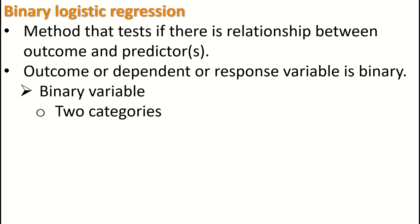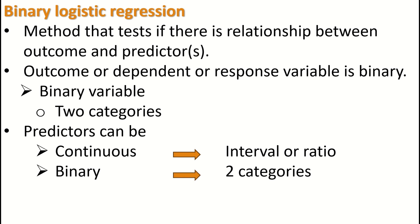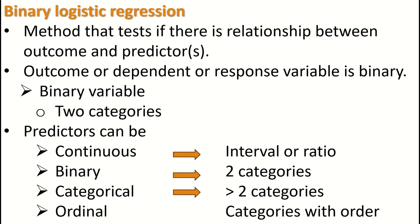It is a nominal variable, a categorical variable with only two categories. On the other hand, the predictor or predictors can be either a continuous variable measured at an interval or ratio level, or it can be a binary variable with two categories, or it can be categorical, multinomial, or nominal with more than two categories. Finally, the predictor can be ordinal. An ordinal variable is a variable with categories that have order, such as age classes.